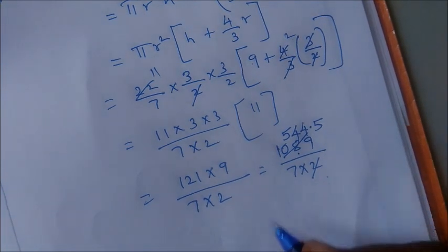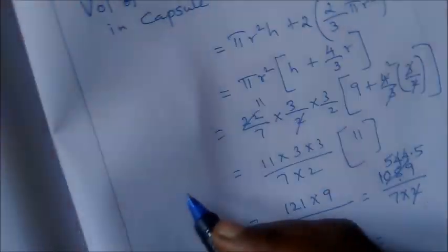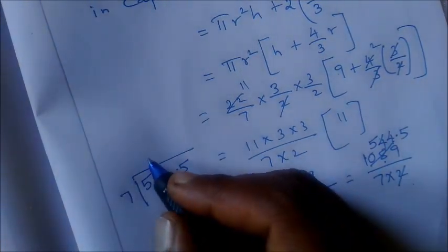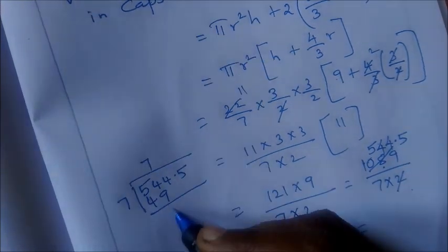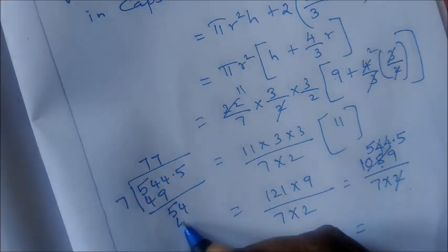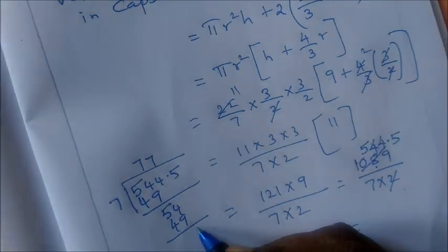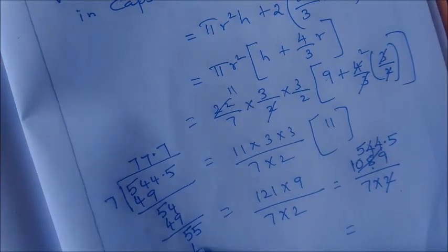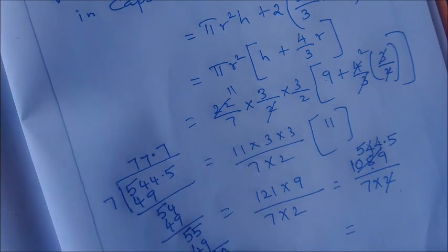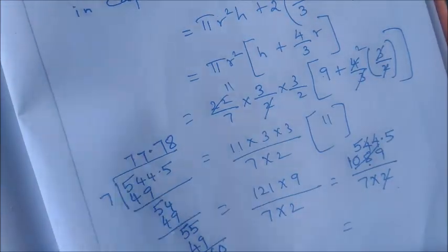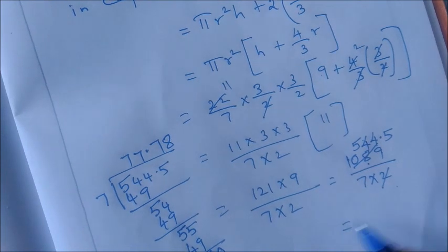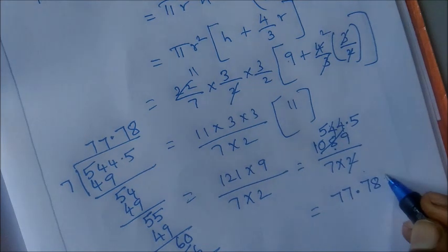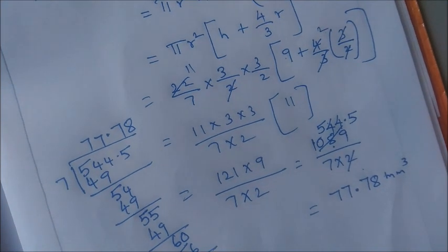So 7 is now to cancel. 7 table is 5, 5, 4, 5. 7 table is divide. So 7 times 49, balance is 5, 5, 4. Again 7 times 49, then put decimal. Then 5, 5, 5. Again 7 times 49, balance is 6. Put 0. Then 8 times 56. Balance 4. So 77.78 mm cube. Okay, thank you.